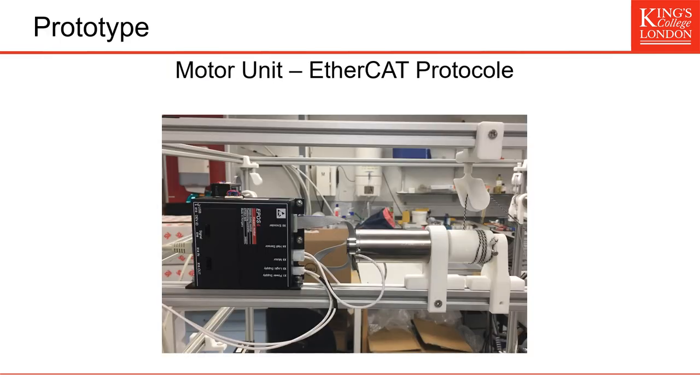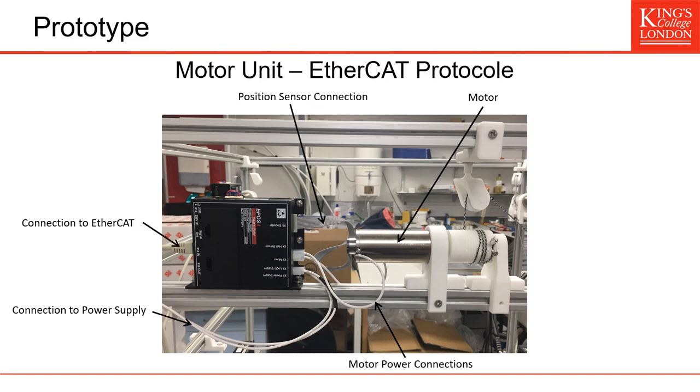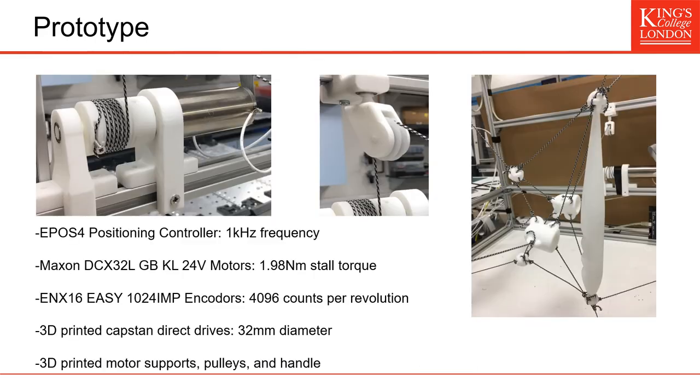Then we built a prototype to validate those models. This is one motor unit for one cable. And it is composed, of course, of a DC motor. And you have a position sensor. And we used the EtherCAT protocol to synchronize all the motors together. All the parts that support the motor and transmit the cable are 3D printed. And this includes also the cable drum, the pulley, and the motor support. In order to limit friction in the system, we use bearings for the joints that support the motor, and also for the joints that support the pulley. The handle was also fully 3D printed.